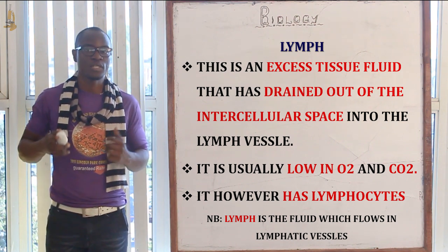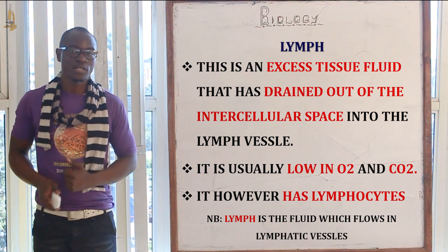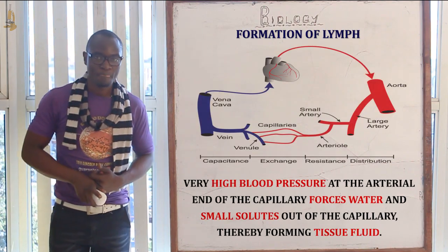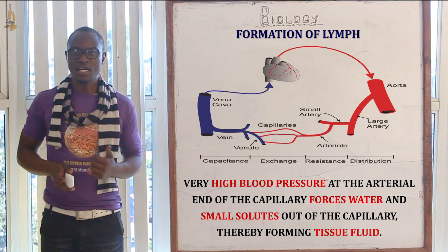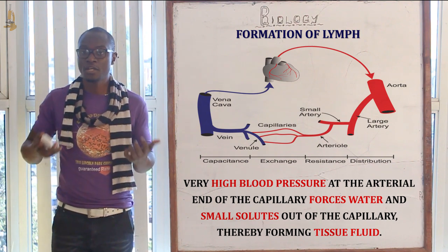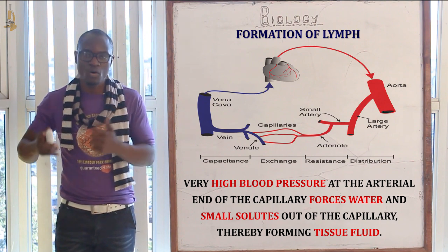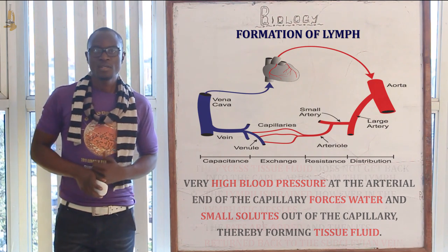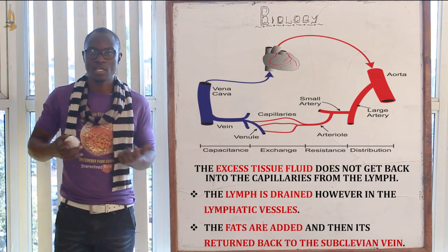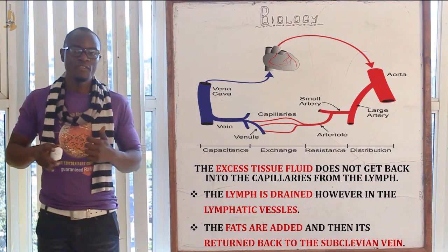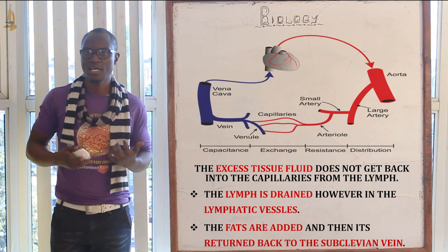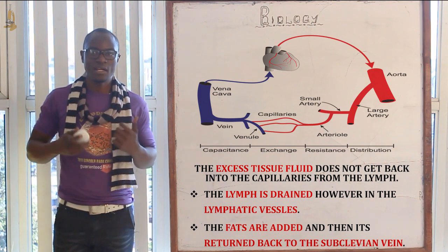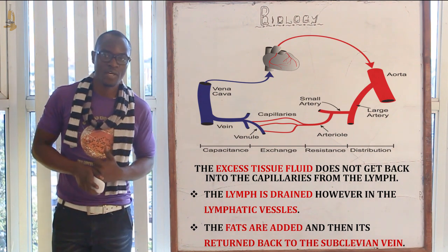The lymph contains lymphocytes. Regarding how lymph is formed: high pressure at the arterial end of the capillaries forces water and a small amount of solute out of the capillaries, thereby forming the tissue fluid. The excess tissue fluid does not return into the capillaries; instead, it is drained into the lymphatic vessels, forming the lymph. Fats are then added to the lymph, which is then returned to the subclavian vein.